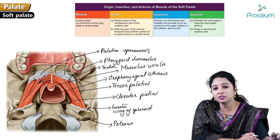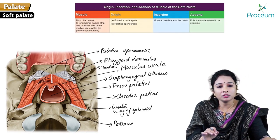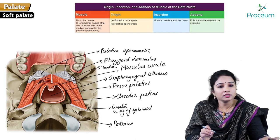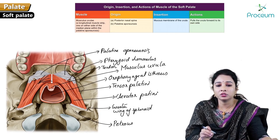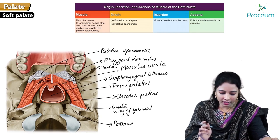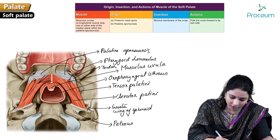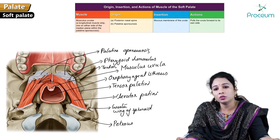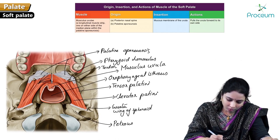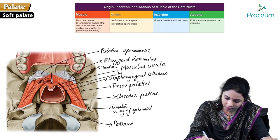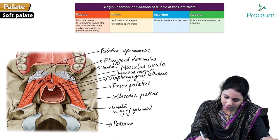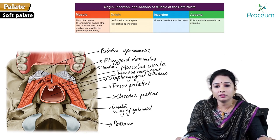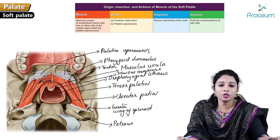The musculus uvulae is the only intrinsic muscle. It is a longitudinal muscular strip on either side of the median plane within the palatine aponeurosis. It originates from the posterior nasal spine and palatine aponeurosis, and inserts into the mucous membrane of the uvula. Its action is to pull the uvula forward on its own side.